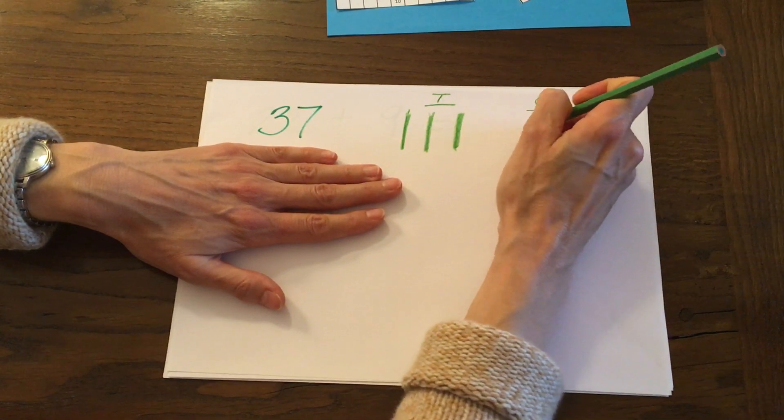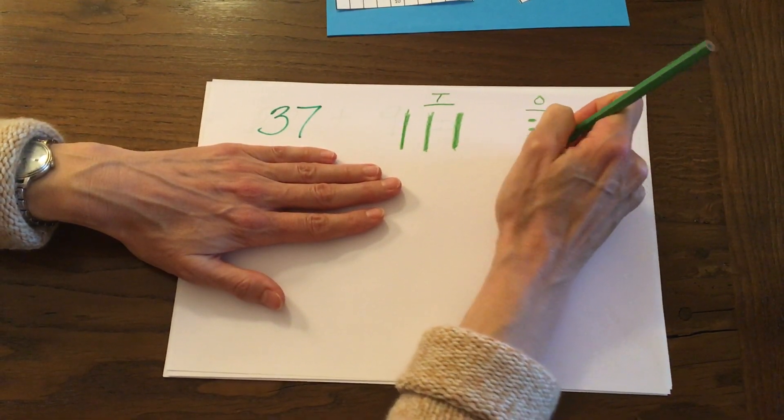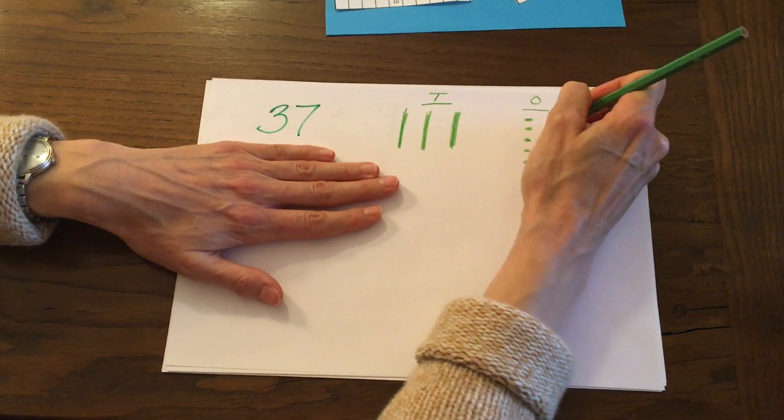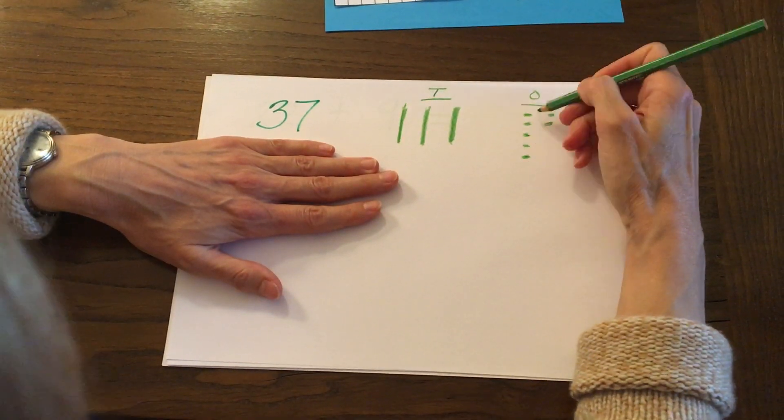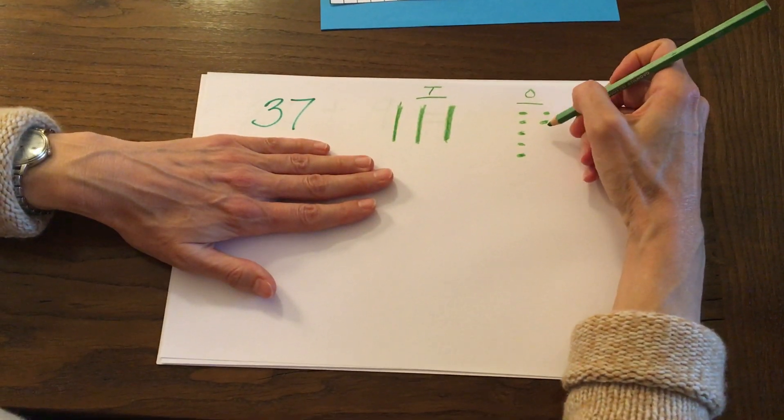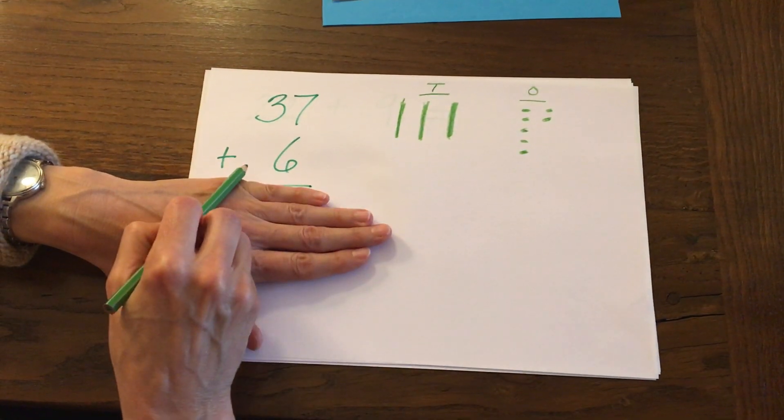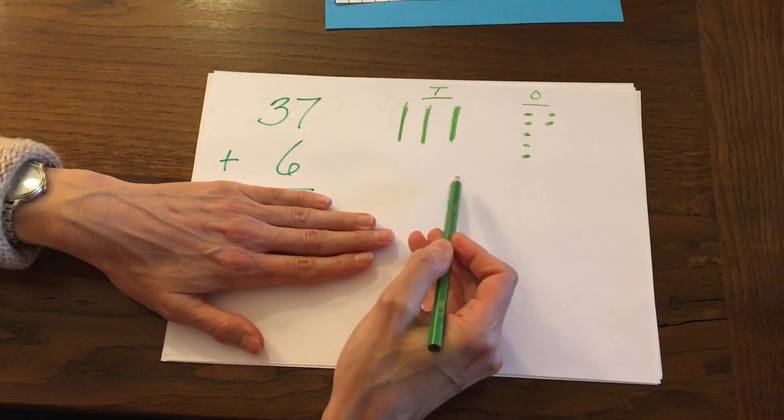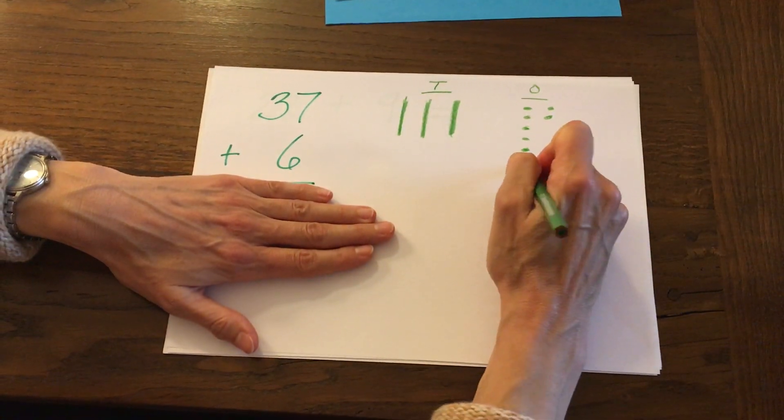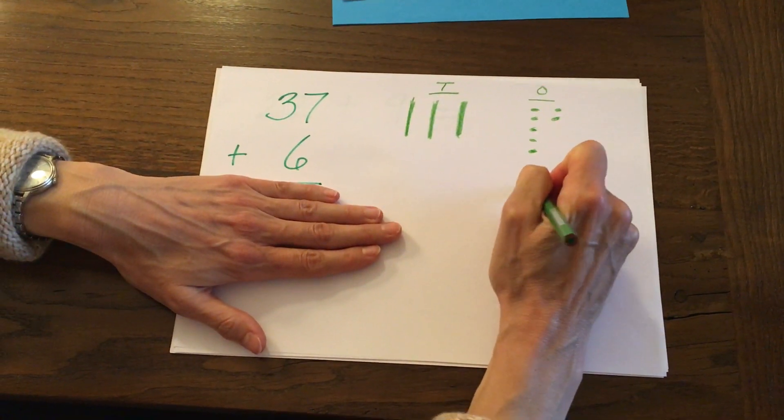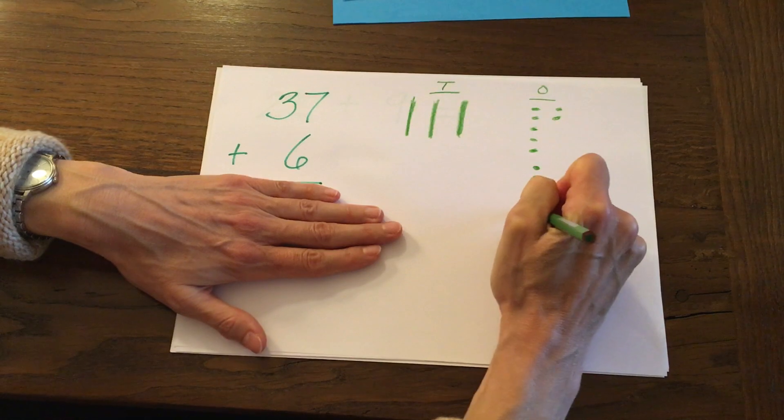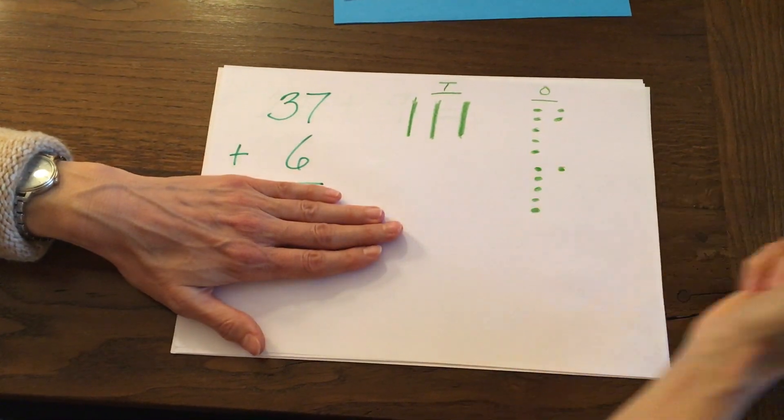So I'm going to draw one, two, three, four, five, six, seven. Notice I did a group of five here and the other two up here. Now let's do the next number, plus 6. No tens so nothing over here. I just have to draw those six ones. One, two, three, four, five, and then put the six over there.